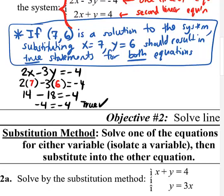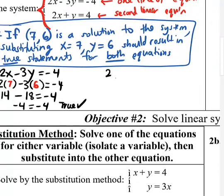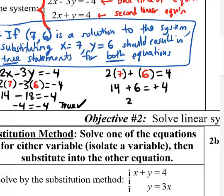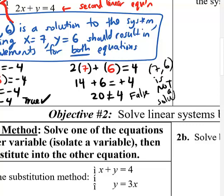So far so good, but I have to substitute that ordered pair into both equations and get a true statement. I can't just test it in one and say we're done. For the second equation, x is 7, y is 6. I simplify: 2 times 7 is 14, plus 6 is 20, which is not equal to 4. That's false. Since the second equation is false, 7 comma 6 is not a solution to the system.